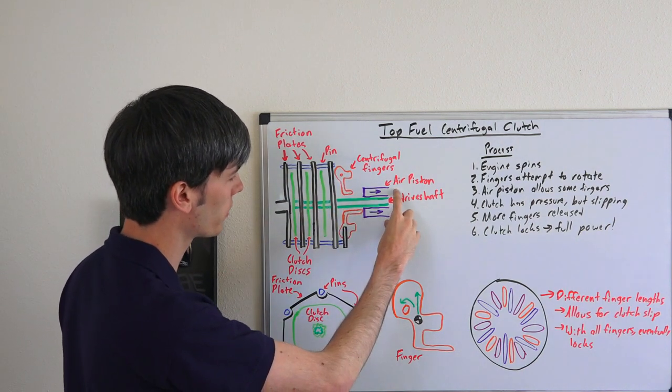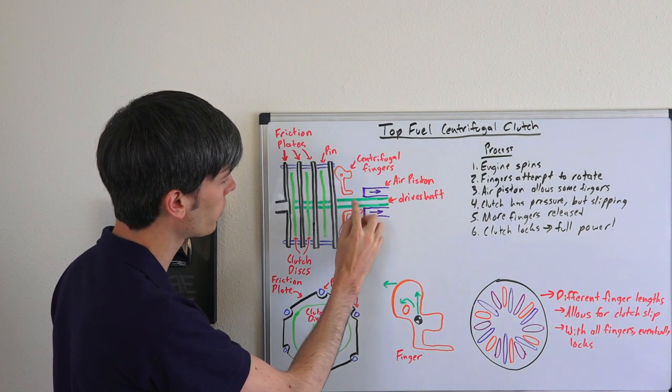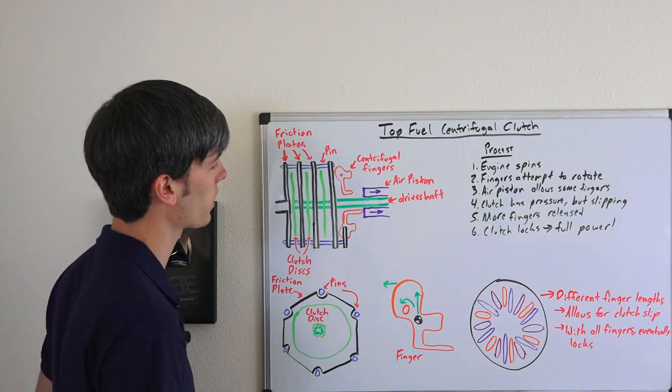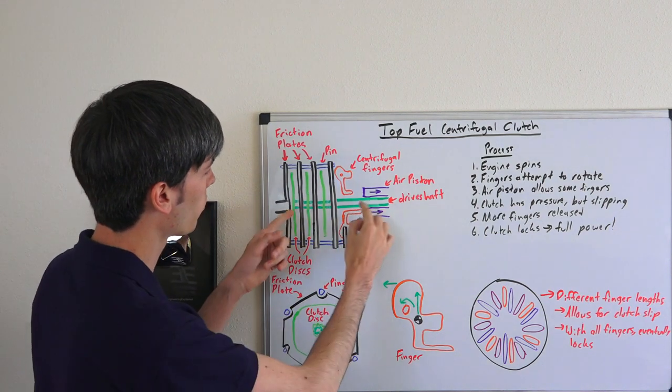Back here we have an air piston, and these fingers have different length ends on them. These different lengths allow different fingers to be activated at different times, and then we have this drive shaft.